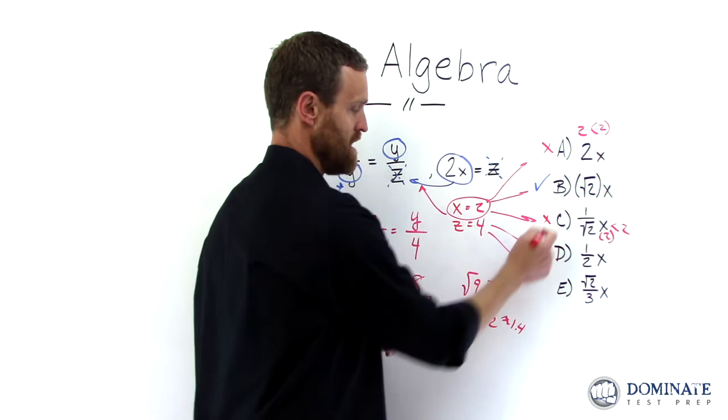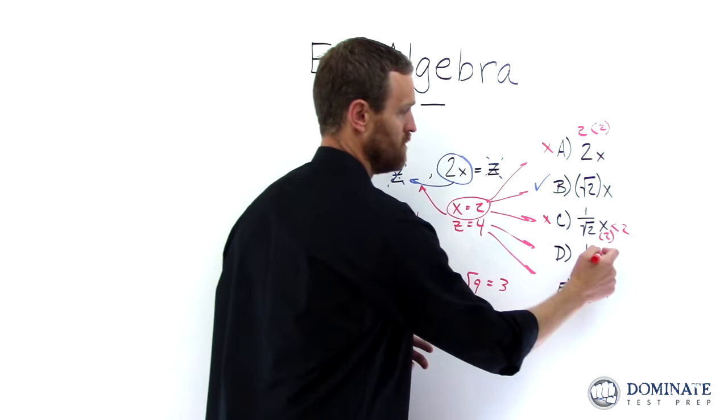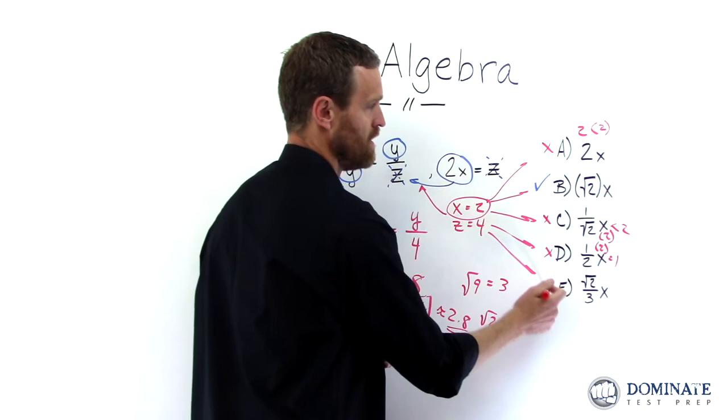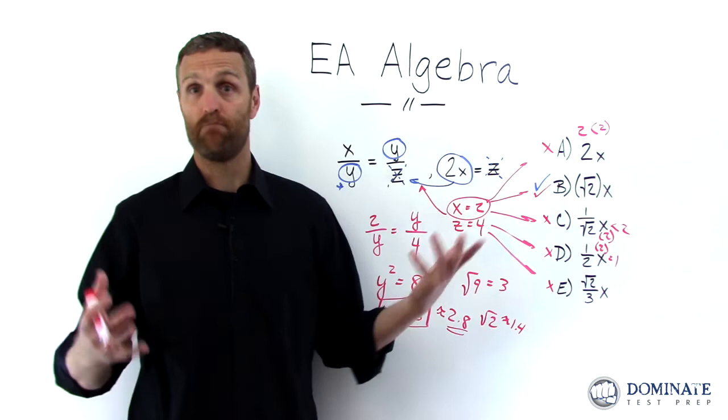1 half of X, 1 half of 2 is just 1. So definitely not D. And then that gets even smaller. So yeah, at that point, without even having to do the math, we know the answer is going to be B by working with real numbers.